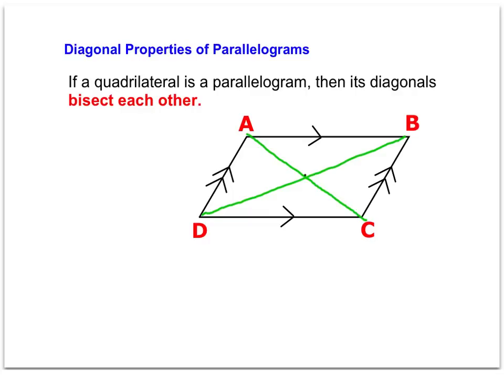If we say that this point here is E, where they cross, that means that segment AE would be congruent to segment EC, and because they bisect each other, DE also is congruent to EB.